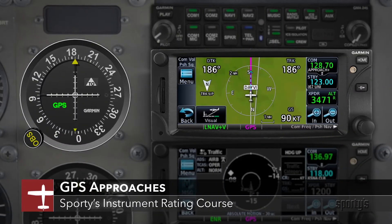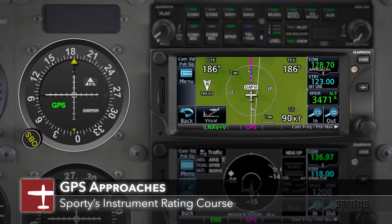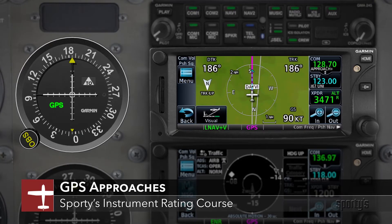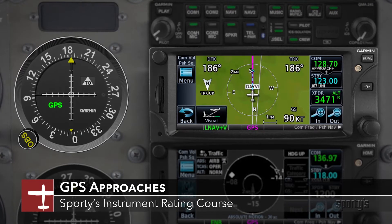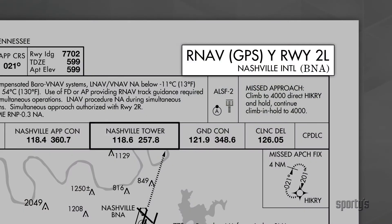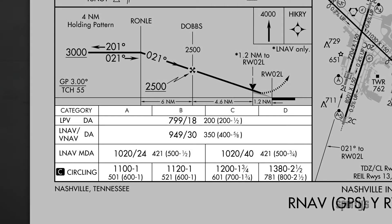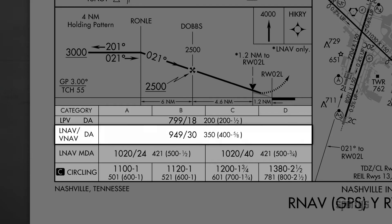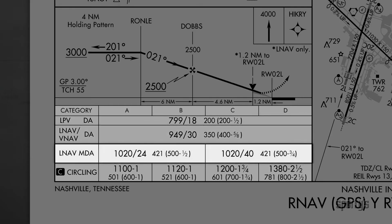GPS approaches are available at nearly every airport in the U.S. and can provide both lateral and vertical approach guidance comparable to the precision of an ILS approach. While all GPS approaches have the same RNAV GPS title at the top of the procedure, each will have some differences in the minima section at the bottom of the chart. Options here include LPV, LNAV-VNAV, or LNAV.